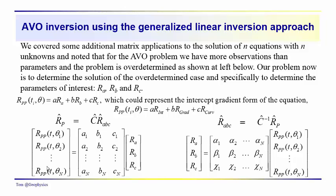In this case we have N observations at a particular time, and we have these coefficients, which we can calculate with information about the angle, the reflection angle, the P-wave and shear wave velocities, and so on. We have these unknowns that we're trying to determine. What we want to do is construct this inversion so that we can solve for these parameters. In order to do that, we need the inverse of C.